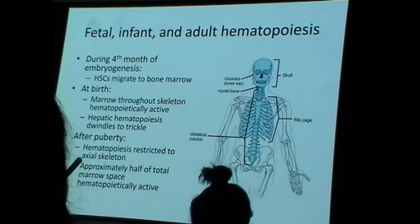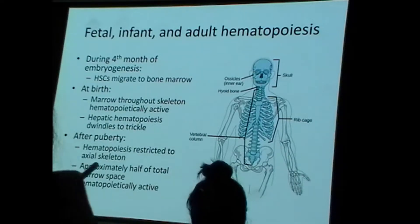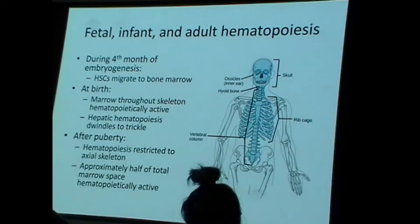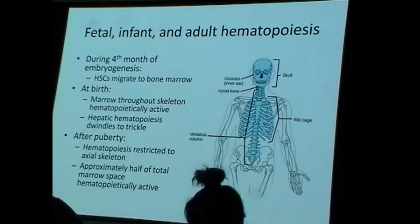Hematopoietic stem cells also begin to migrate to the bone marrow during embryogenesis. By the time the individual is born, the marrow throughout the skeleton is active. After puberty, we restrict hematopoiesis to the axial skeleton. The bones in blue are the axial bones; the bones in white are the appendicular bones.